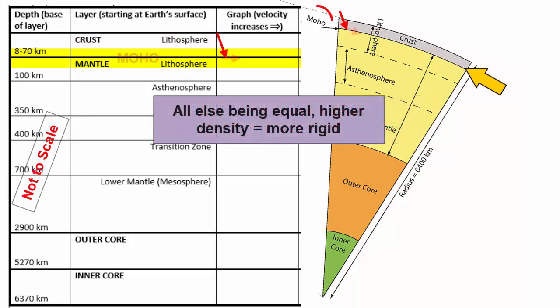At the base of the crust, seismic waves will cross into a new compositional layer, the mantle. Both layers are solid, but the top of the mantle is denser than the base of the crust. All else being equal, this increased density does lead to increased rigidity. Therefore, as seismic waves cross this boundary, they speed up and bend upward.